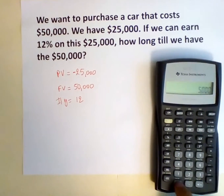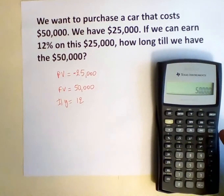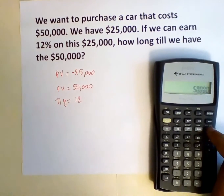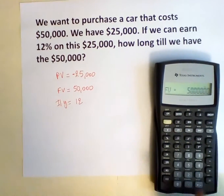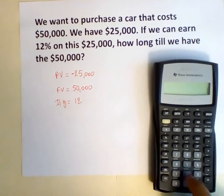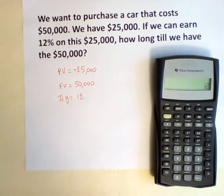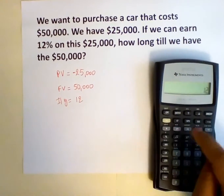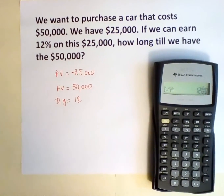$50,000 is our future value, so we hit the FV button. 12 is our interest rate, so we hit the I over Y button.